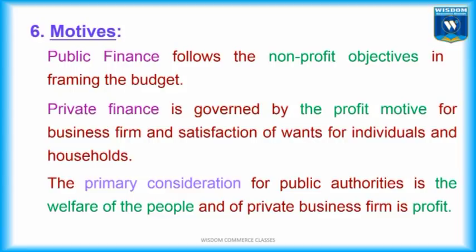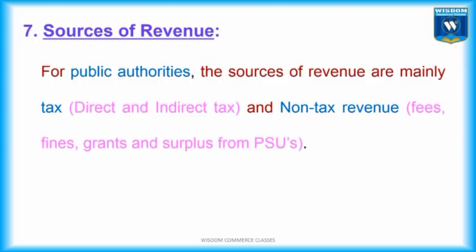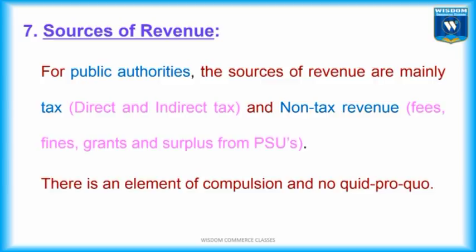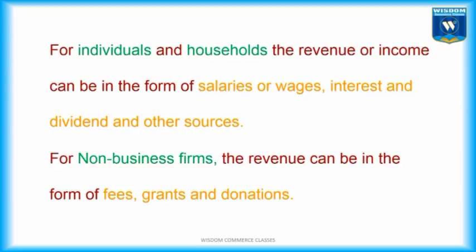Point No. 7 — Sources of Revenue. For public authorities, the sources of revenue are mainly tax — that is, direct and indirect tax — and non-tax revenue, that is, fees, fines, grants, and surplus from PSUs. For individuals and households, revenue or income can be in the form of salaries or wages, interest and dividends, and other sources. For non-business firms, revenues can be in the form of fees, grants, and donations.